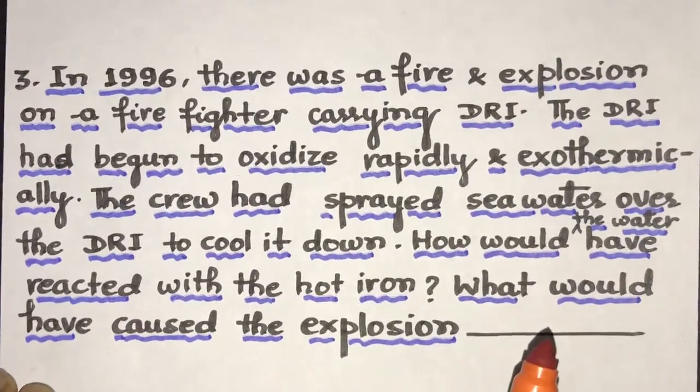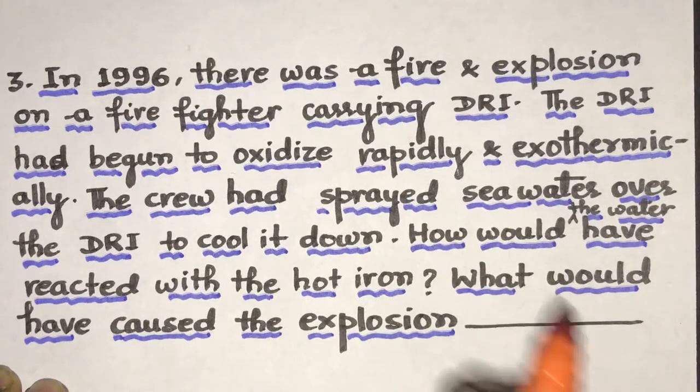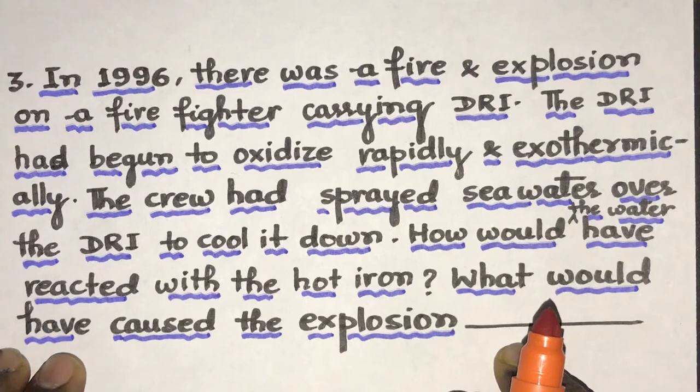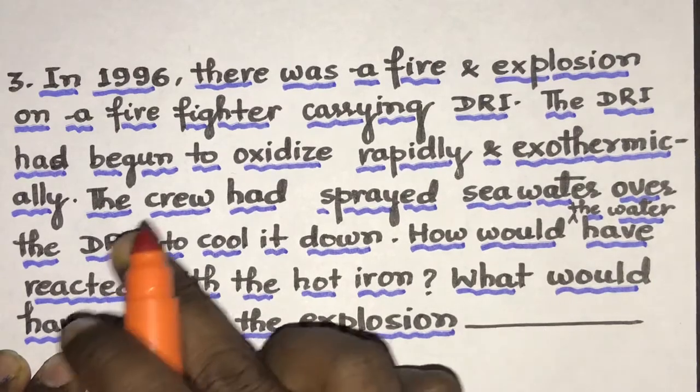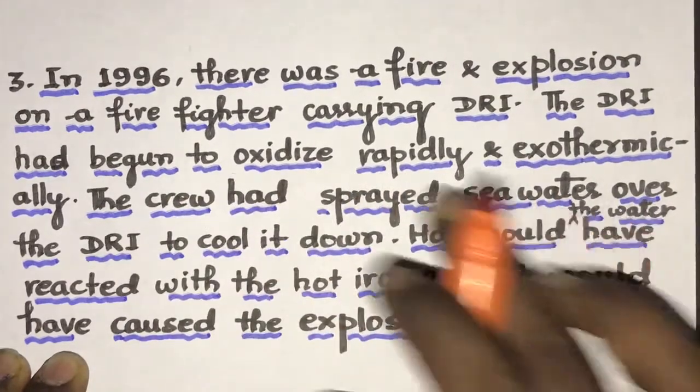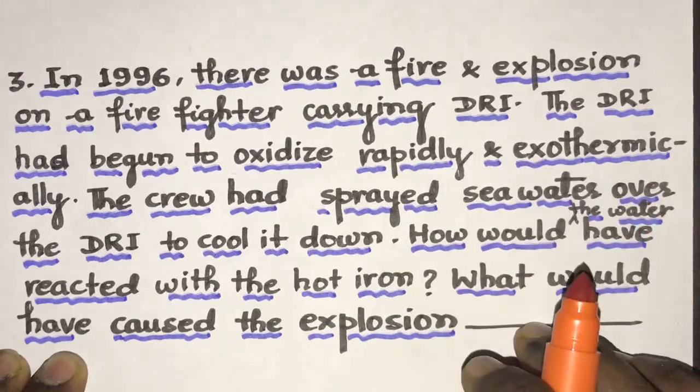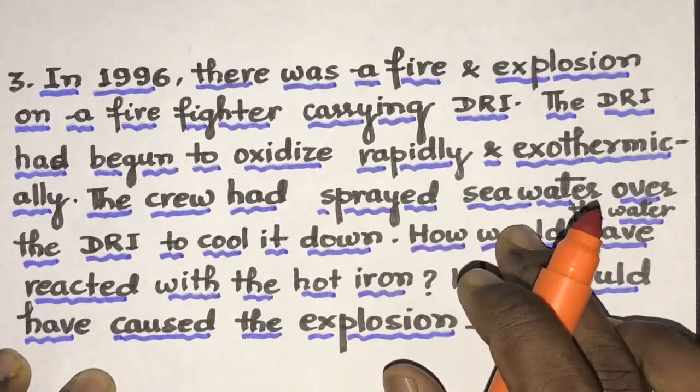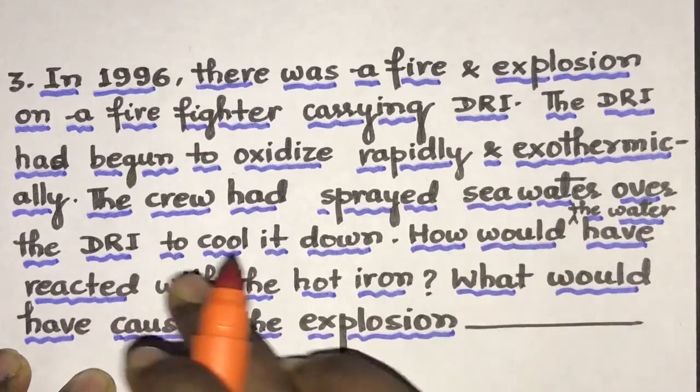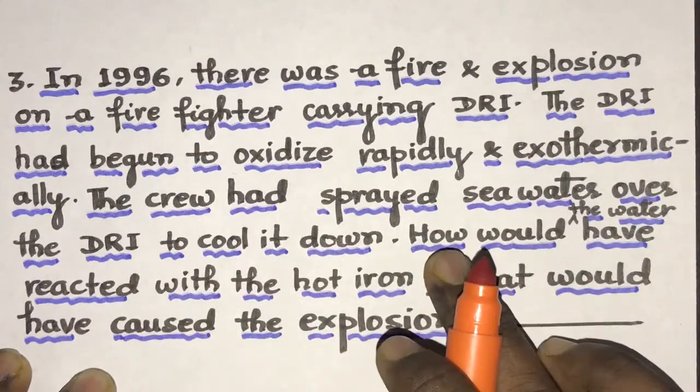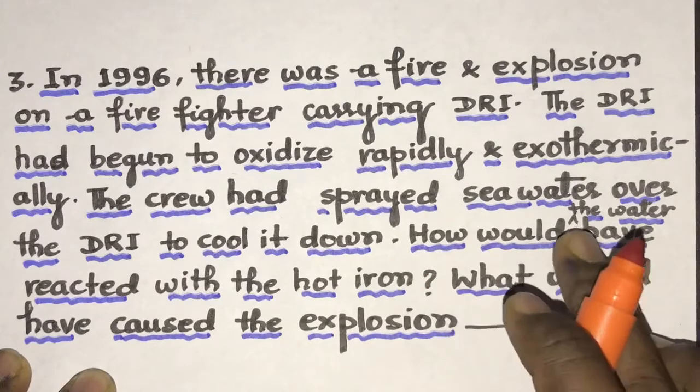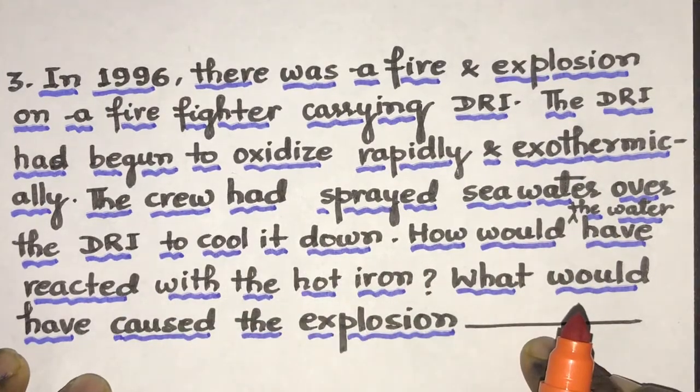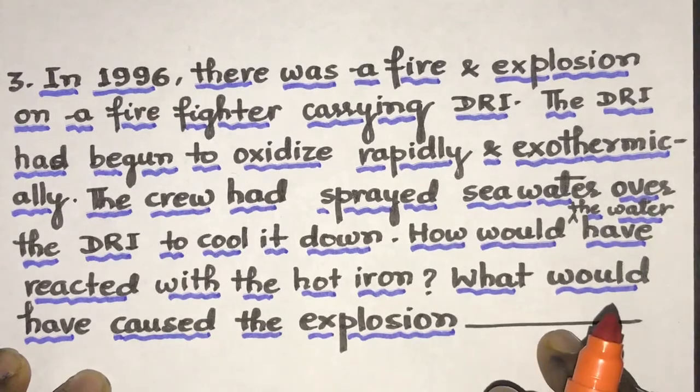In 1996, there was a fire and explosion on a firefighter carrying DRI. The DRI had begun to oxidize rapidly and exothermically. The crew had sprayed water, seawater over the DRI to cool it down. Now, how would the water have reacted with the hot iron? What would have caused the explosion?